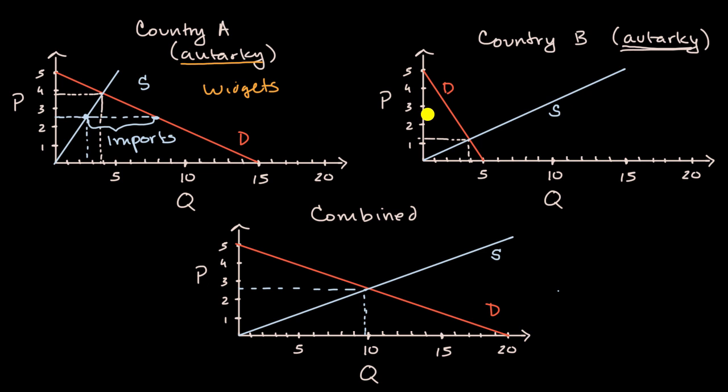Let's look at the equilibrium price in Country B. Country B was really the lower cost producer. Now we have a price a little bit over 2.5. The suppliers in Country B are going to be producing a lot more than they were before. Only this amount is coming from their domestic demand, and then all of this amount is being exported. If we're assuming the world economy is only made up of Country A and Country B, these exports become Country A's imports.